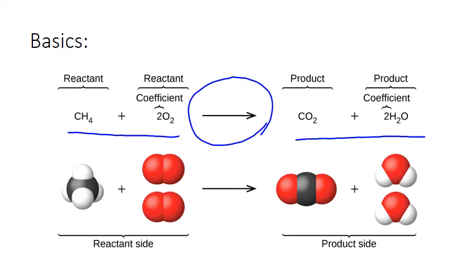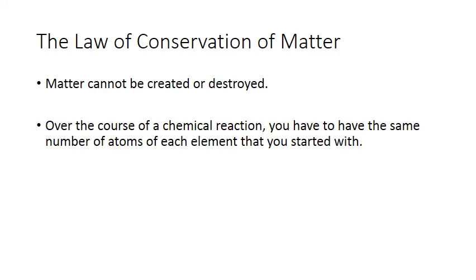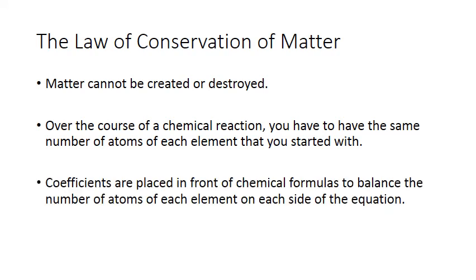What's also written in any chemical equation are coefficients. Coefficients are numbers written in front of chemical formulas to make sure that the law of conservation of matter is obeyed. The law of conservation of matter states that matter cannot be created or destroyed. In a chemical reaction, this means you have to have the same number of atoms of each element at the end of the reaction as you started with. If you start with four atoms of oxygen on the reactant side, you must end with four atoms of oxygen on the product side. Coefficients are placed to ensure you end up with the same number of atoms on each side.